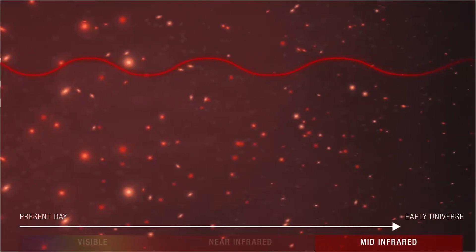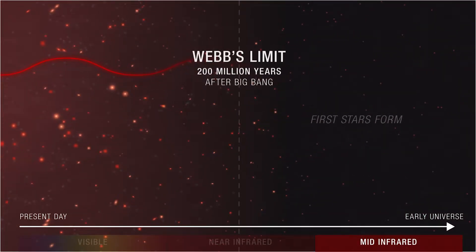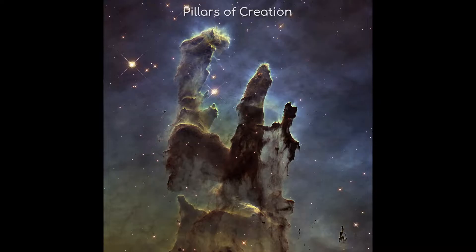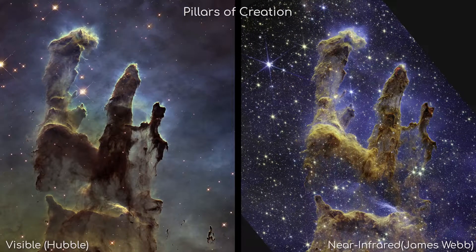On top of that, infrared is much better at punching through dust clouds and other obscuring debris, giving the James Webb telescope the incredible ability to see objects that are beyond the sight of Hubble.